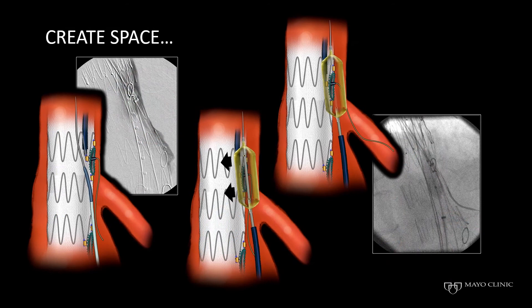Less frequently, you may have to create space. That can be done using a separate sheath and a separate wire left behind the stent graft between the aorta and the stent graft, or it can be done through the same sheath by upsizing to an 8 or 9 French to allow placement of two 0.035 systems, or a 0.018 and a 0.035 system.